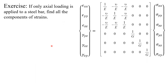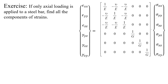Here is an exercise to make sure we know how to use these tensors. If only axial loading is applied to a steel bar, find all components of strain. If you only have axial loading, the rest of the stresses are zero. Epsilon_xx would be (1/E)·sigma_xx; epsilon_yy would be (-ν/E)·sigma_xx; epsilon_zz would be (-ν/E)·sigma_xx; and the rest would be zero. That's consistent with what we know from Poisson's ratio, and it verifies that we can correctly use the elasticity and compliance tensors.